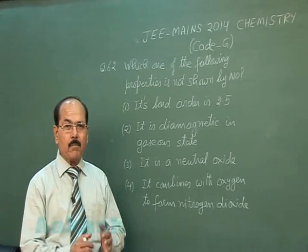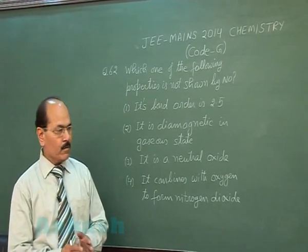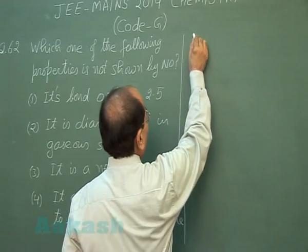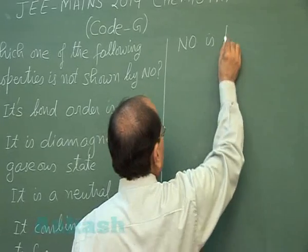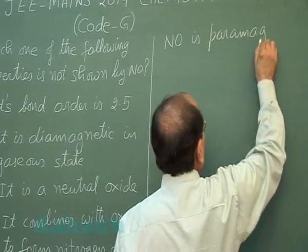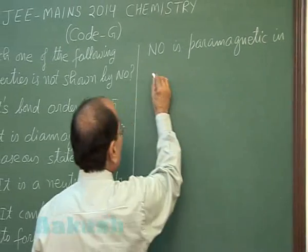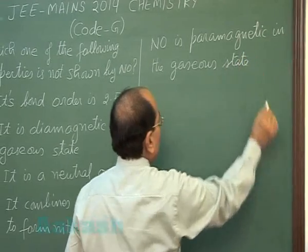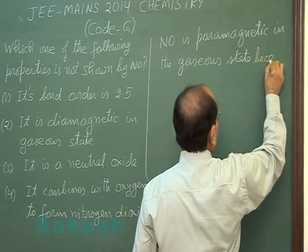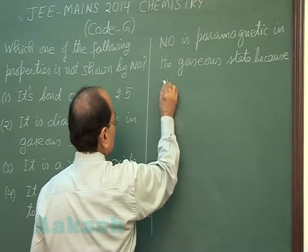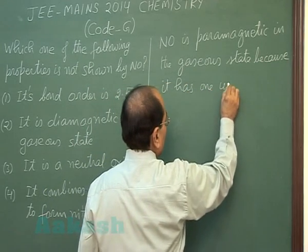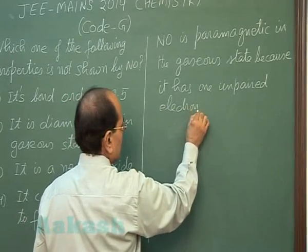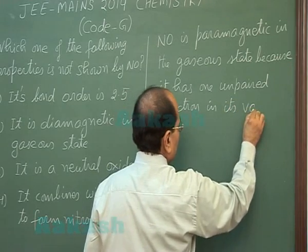Nitric oxide is paramagnetic in the gaseous state because it has one unpaired electron. If you look at the electronic configuration of nitric oxide, it is paramagnetic in the gaseous state because it has one unpaired electron in its valence shell.